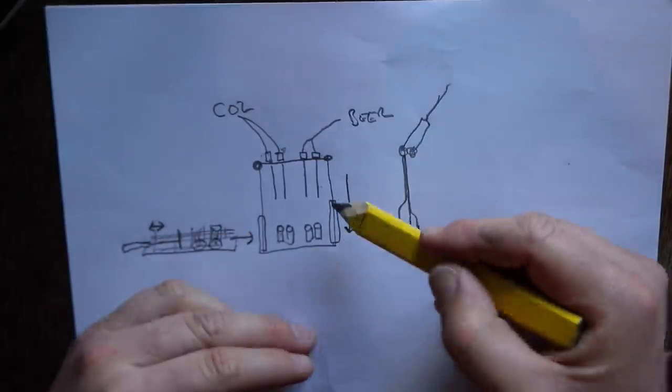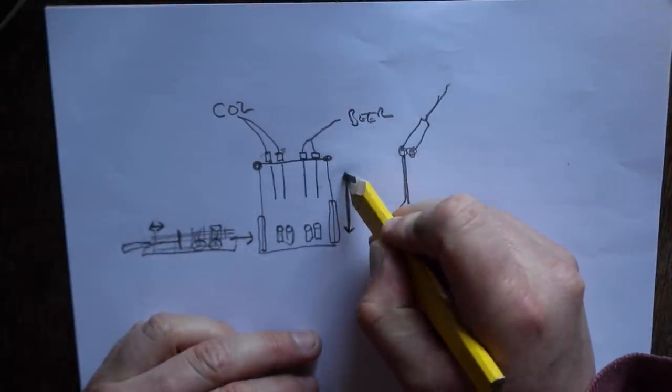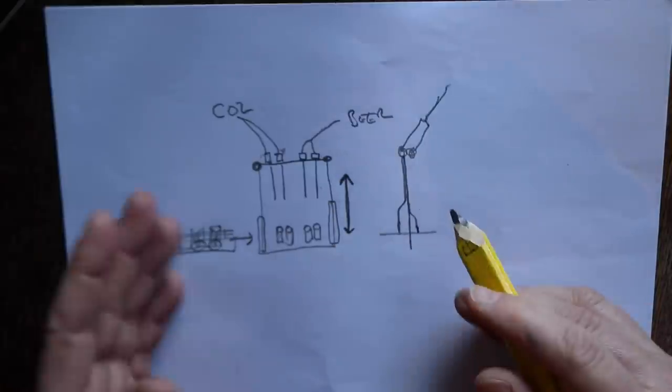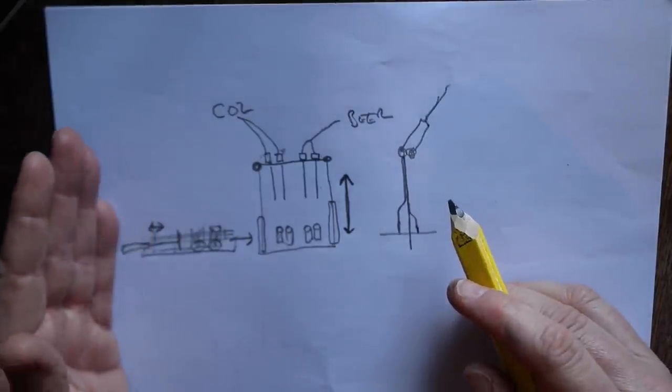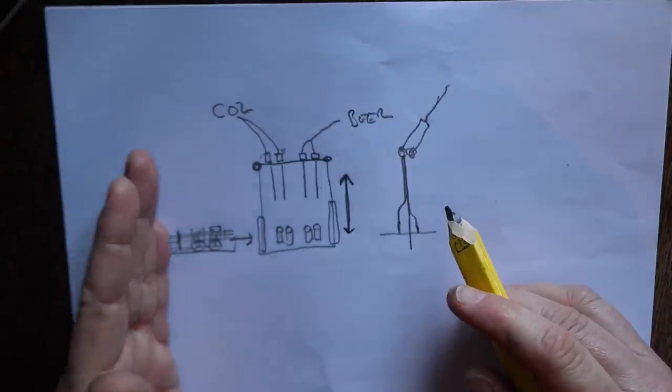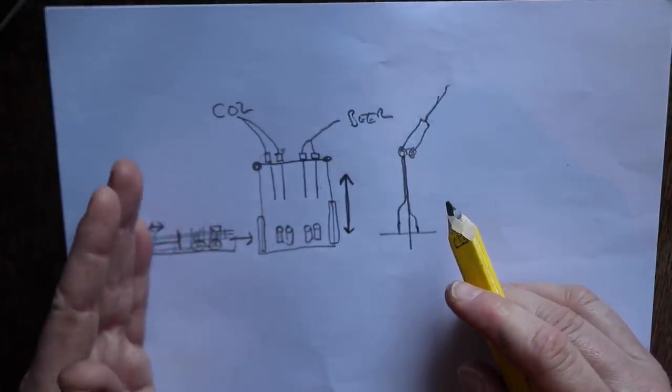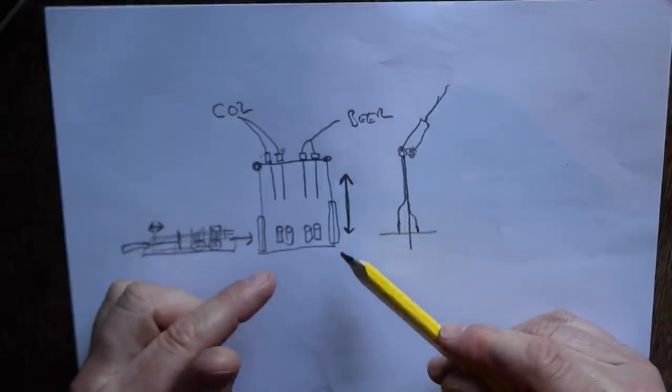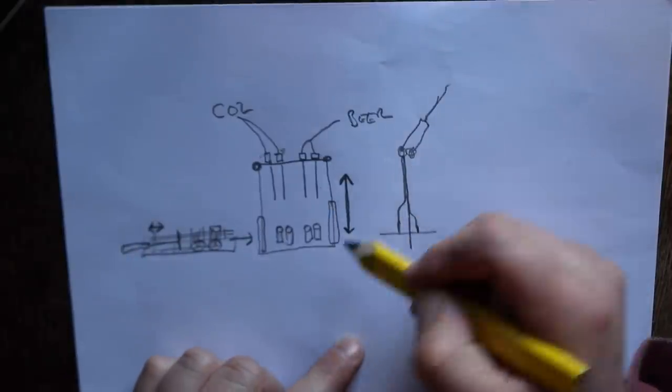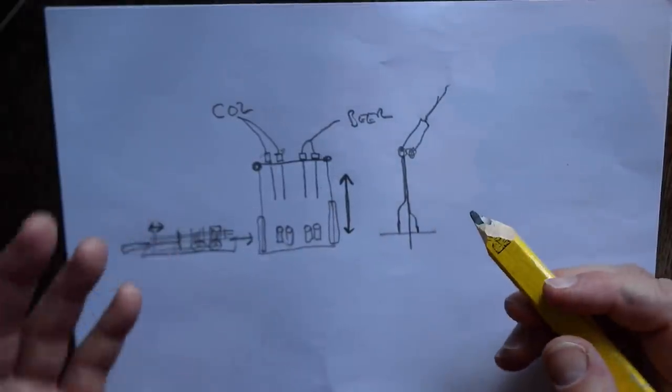Once the beer is filled up to a certain line or height, then the whole thing retracts back up to where it was before, and then we go back to the start again cycle with the solenoid pushing more cans underneath the assembly.